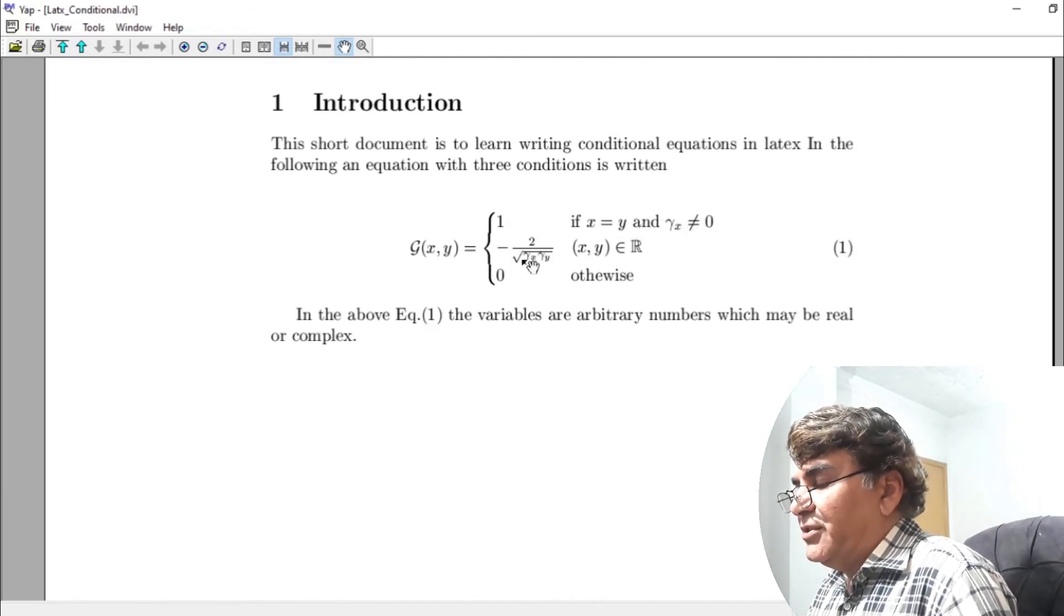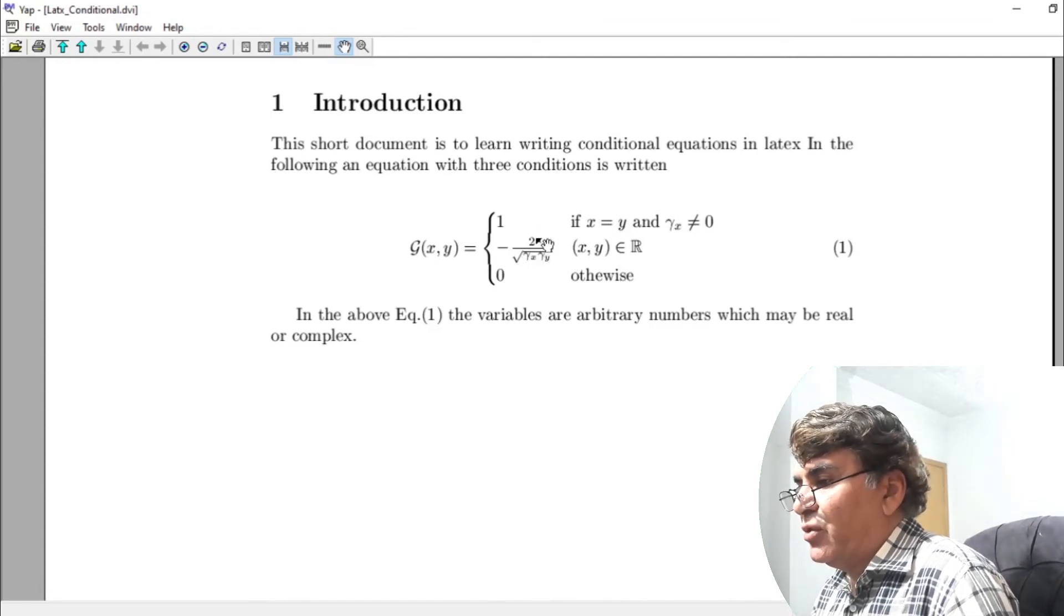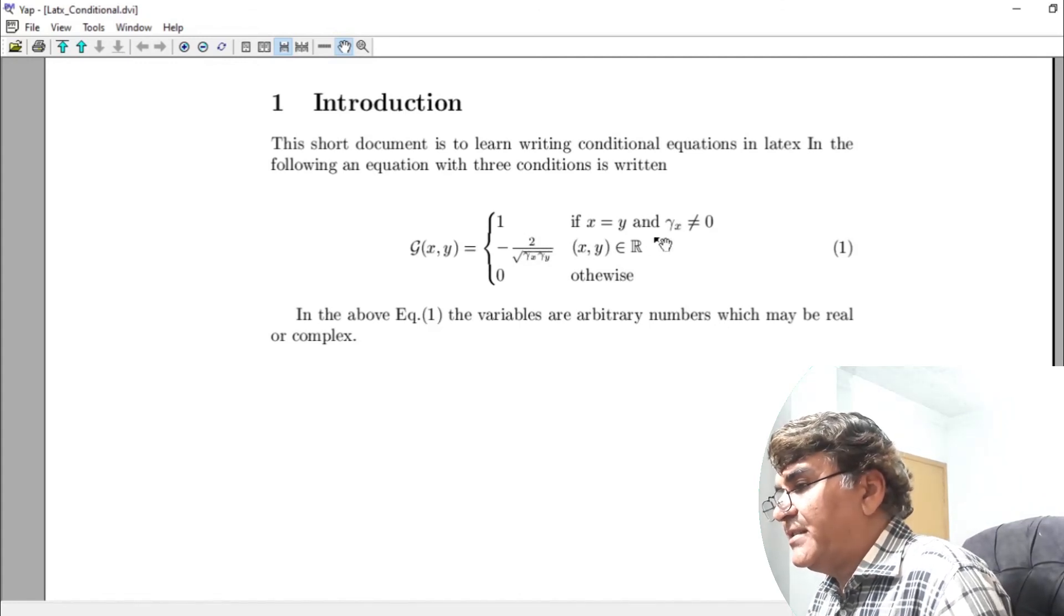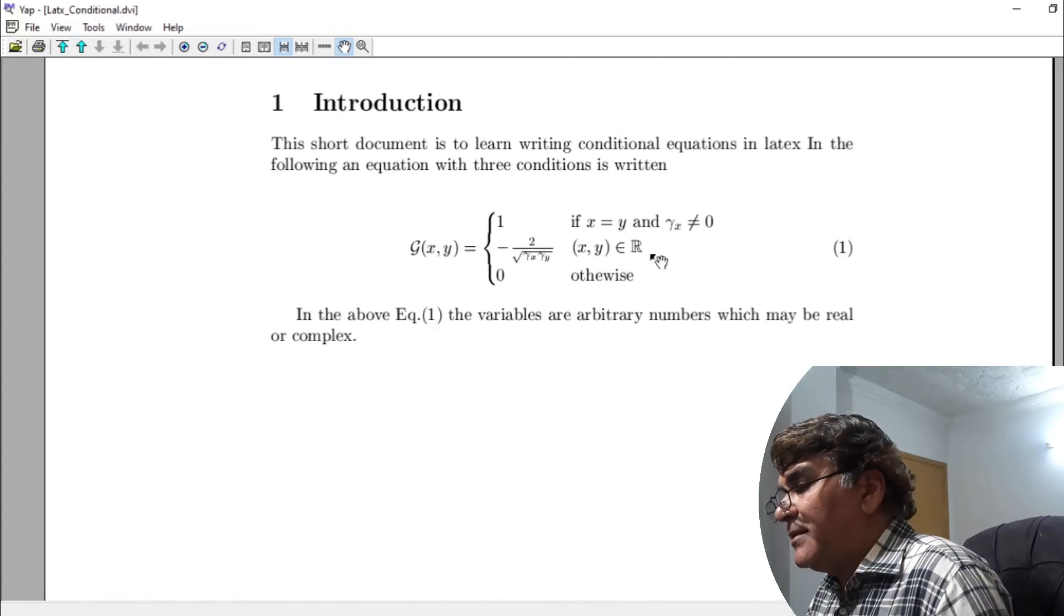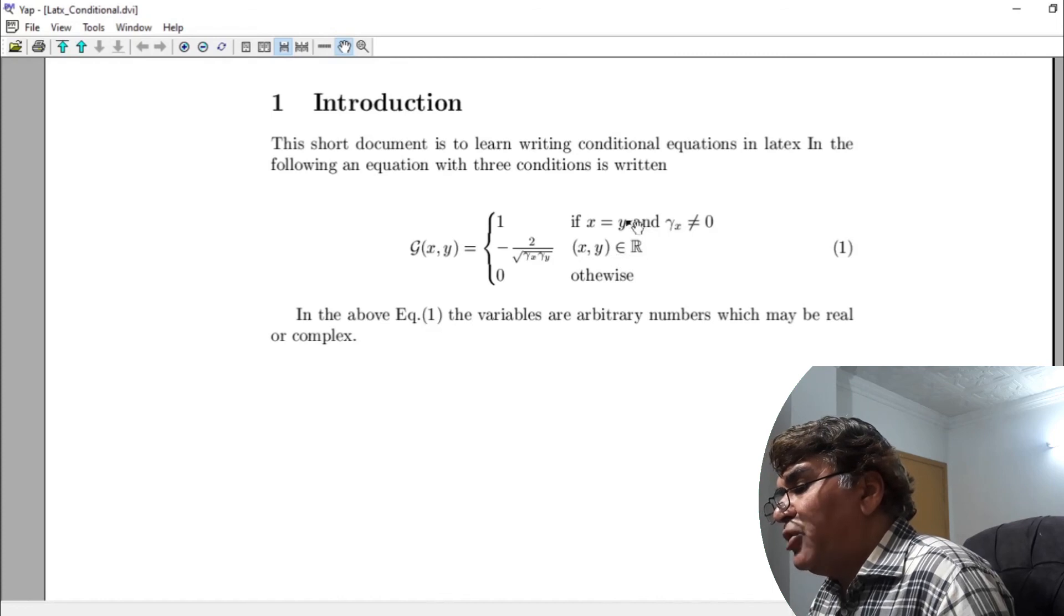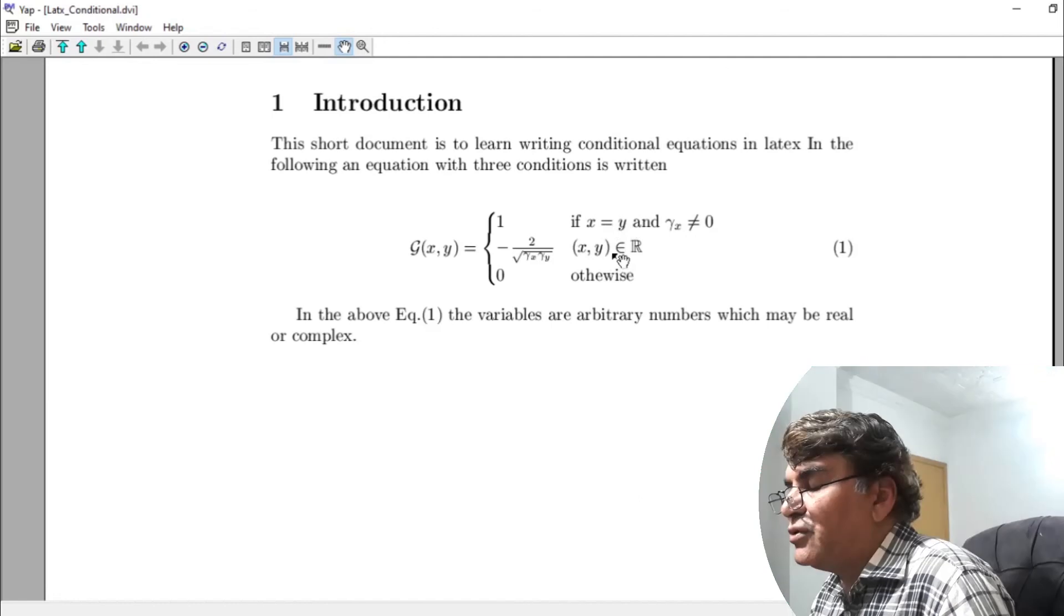This is the value which is the denominator so gamma x gamma y is inside the square root. In the numerator I have written in the first set of curly braces and you see the R, the double line R is added by using the mathbb command.